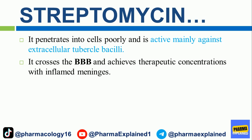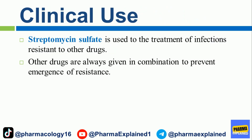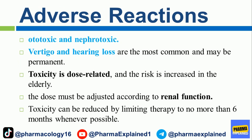Streptomycin penetrates into cells poorly and is active mainly against extracellular tubercle bacilli. It crosses the BBB and achieves therapeutic concentrations with inflamed meninges. Clinical use: Streptomycin sulfate is used for treatment of infections resistant to other drugs, always given in combination to prevent emergence of resistance. Adverse reactions: It is ototoxic and nephrotoxic; vertigo and hearing loss are the most common and may be permanent. Toxicity is dose-related and the risk is increased in the elderly. The dose must be adjusted according to renal function, and toxicity can be reduced by limiting therapy to no more than 6 months whenever possible.